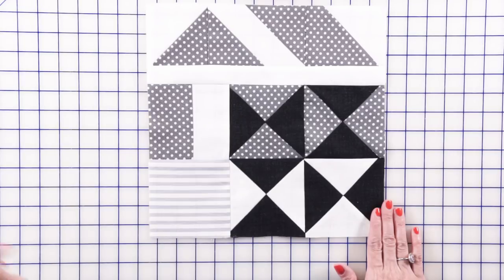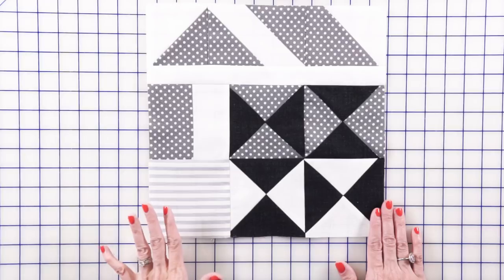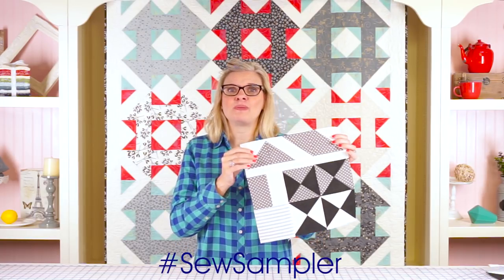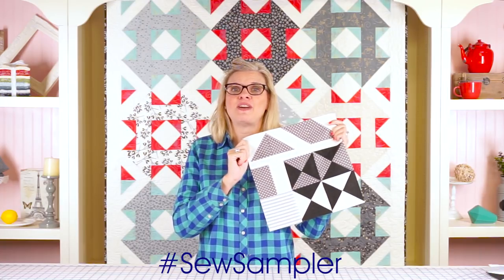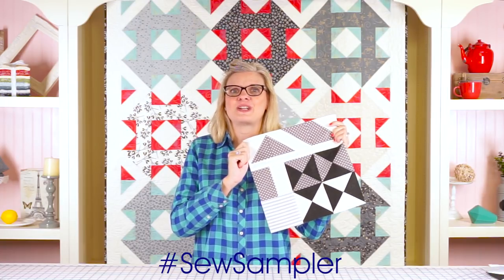So definitely sign up for our sew sampler box. You're going to get months one through 12 from April 2018 to March 2019. And we've got an awesome finishing that's going to come in the March 2019 box. So make sure you're a sew sampler member and pick up your barn block finishing kit and your barn block thread set at the fat quarter shop. And each month, share your block on social media for a chance to win a $25 gift certificate to the fat quarter shop.